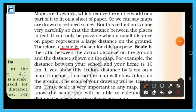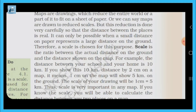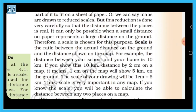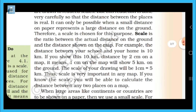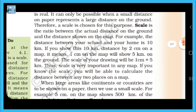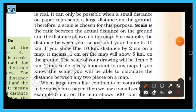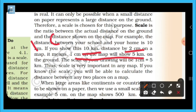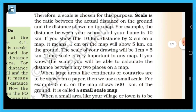Scale is the ratio between the actual distance on the ground and the distance on the map. For example, the distance between your home and your school is 10 km. If you show that 10 km distance as 2 centimeters on the map, then 1 centimeter on the map will represent 5 kilometers on the ground.